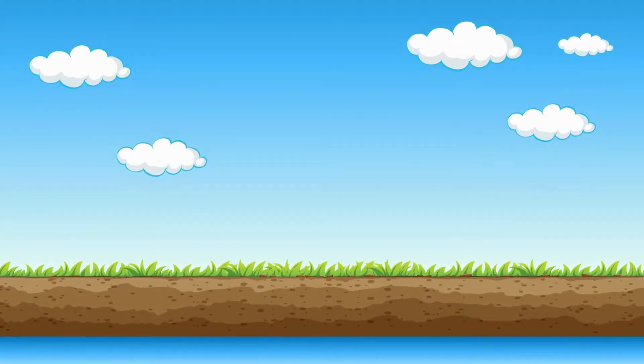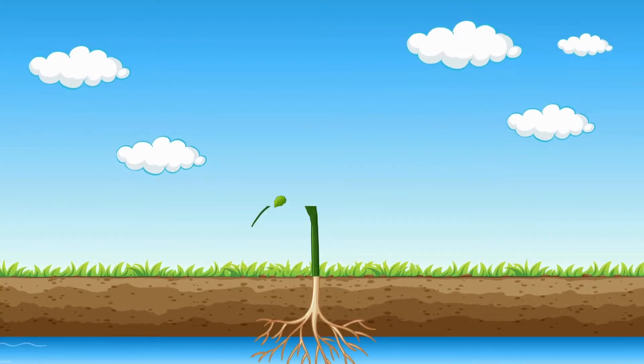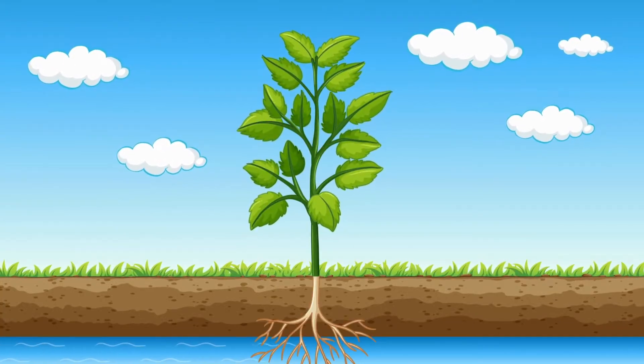Photosynthesis begins in the soil, where plants take in water through their roots. As the water moves upward, the plant starts to grow, from the roots all the way to the leaves.